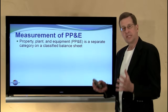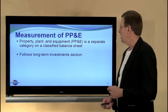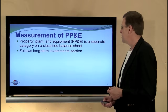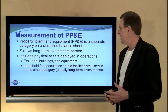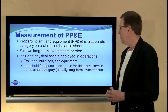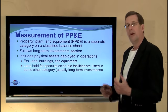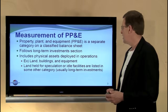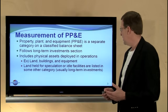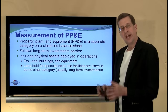Property, plant, and equipment is a separate category on a classified balance sheet. It typically follows the long-term investment section, and it includes the physical assets that are deployed in the operation of the business — for example, land, buildings, and equipment. Recognize that idle land, land held for speculation, or other idle facilities would probably be listed in the long-term investments category.